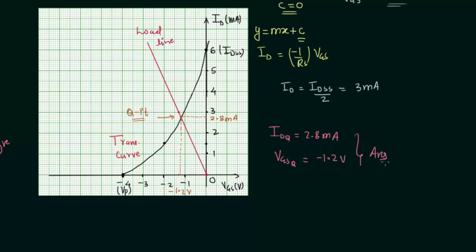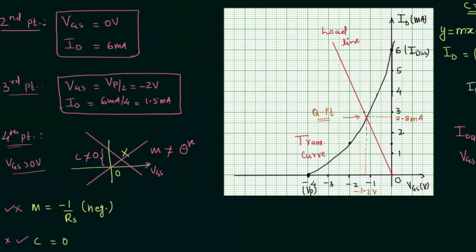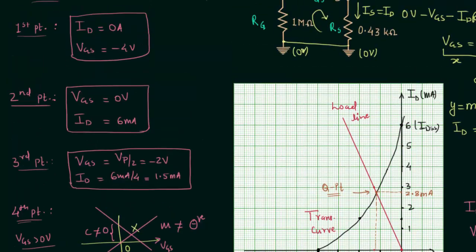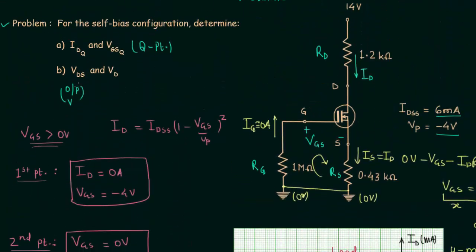Now we move to part B, where we have to find the output voltage VDS and the potential at drain VD. This part is homework for you. Find VDS and VD, and once you have your answer, post it in the comment section. I will end this lecture here — see you in the next one.